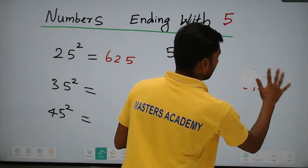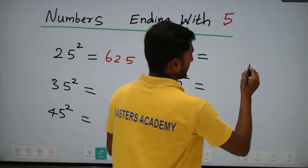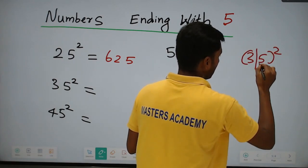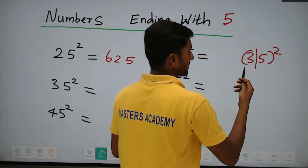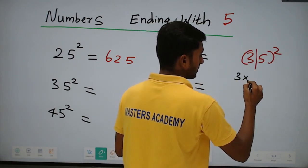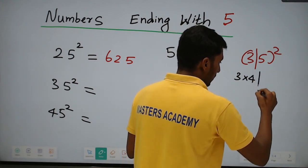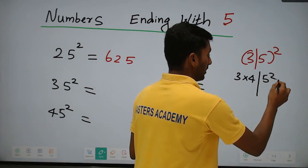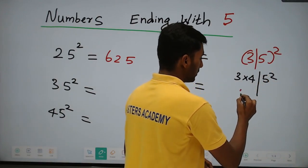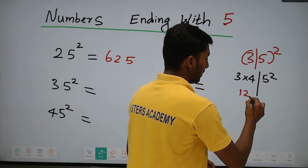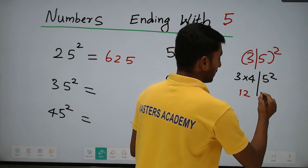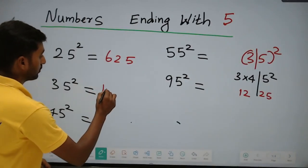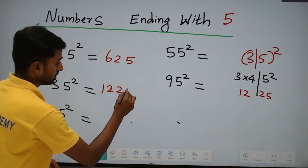For 35 squared: take the first digit 3, go to the next number in the table, which is 4. So 3 into 4 equals 12. Then append 25, since 5 squared is 25. Therefore, 35 squared equals 1225.